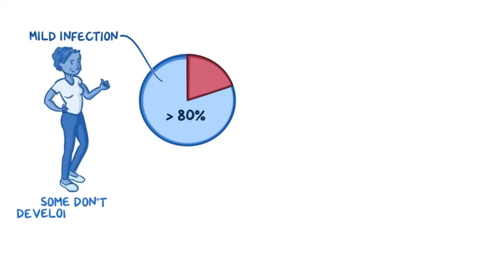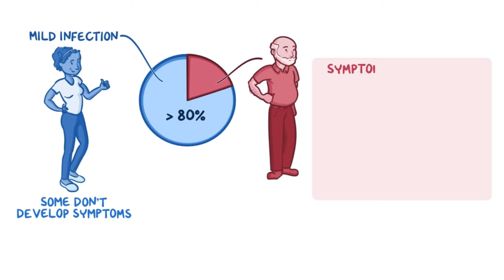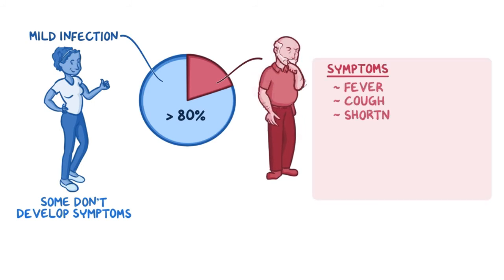Now overall, based on the current data, over 80% of the patients with COVID-19 have a mild infection, and some people don't develop any symptoms at all. For others, they can develop mild symptoms like fever, cough, and shortness of breath. Other symptoms include fatigue and things like loss of smell and taste.